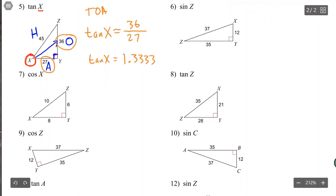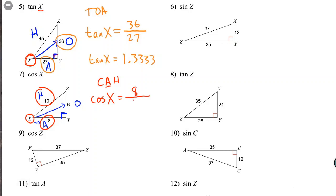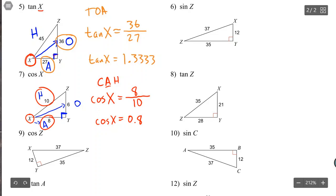Let's try cosine of x. Circle x. Label sides: across from the right angle is the hypotenuse; across the triangle from x is the opposite; right next to x is the adjacent. CAH — cosine equals adjacent over hypotenuse. So cosine of x equals 8 over 10, which is exactly 0.8000.